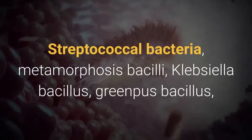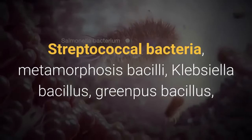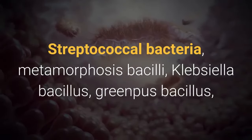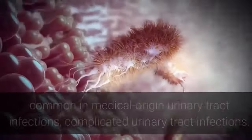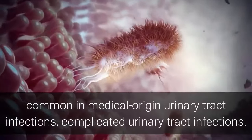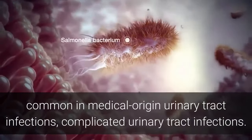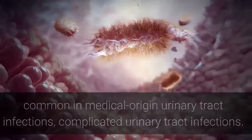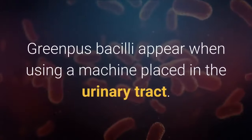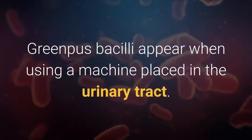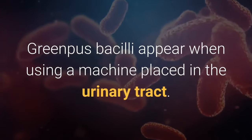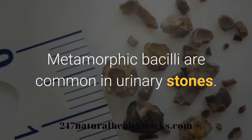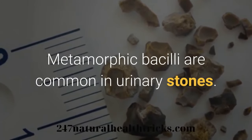Other bacteria involved include streptococcal bacteria, metamorphosis bacilli, Klebsiella bacillus, and Pseudomonas (green pus bacillus). These are common in hospital-acquired and complicated urinary tract infections. Pseudomonas bacteria appear when using instrumentation placed in the urinary tract. Metamorphic bacilli are common in cases of urinary stones.